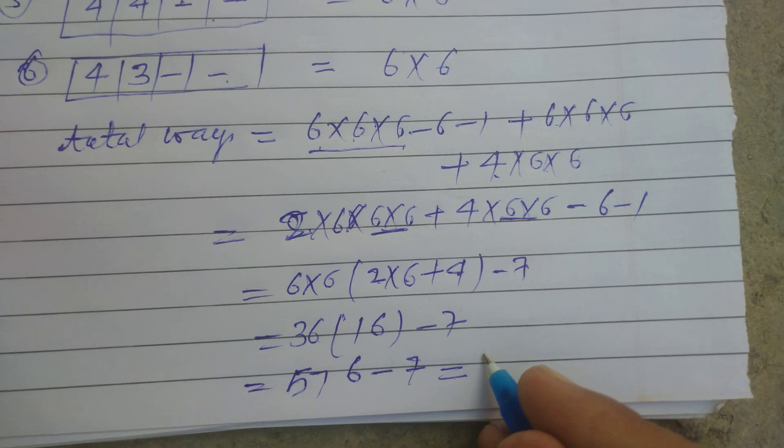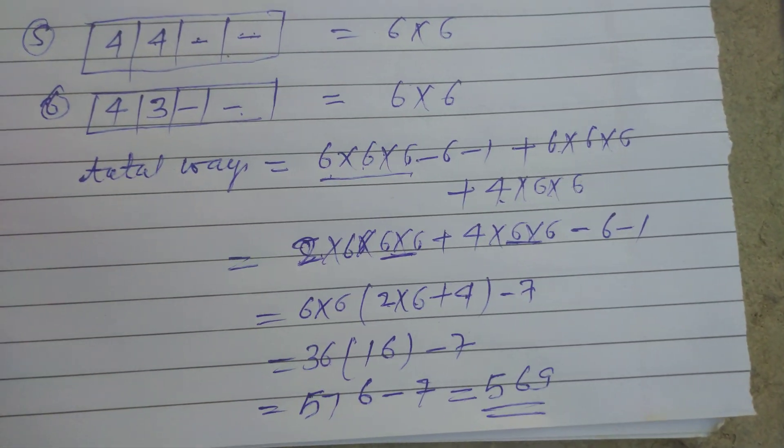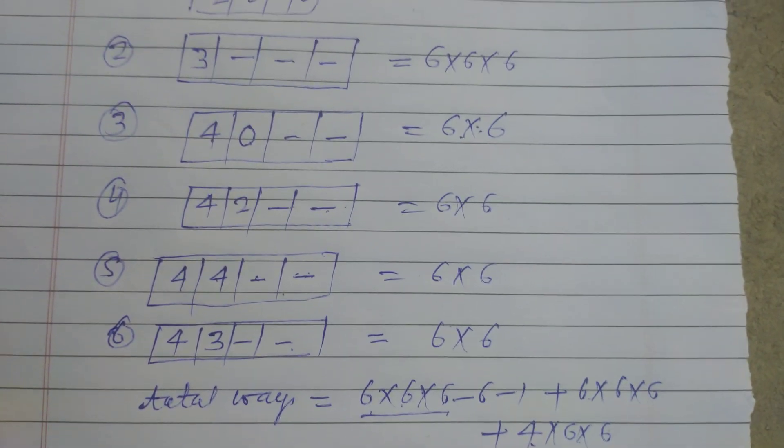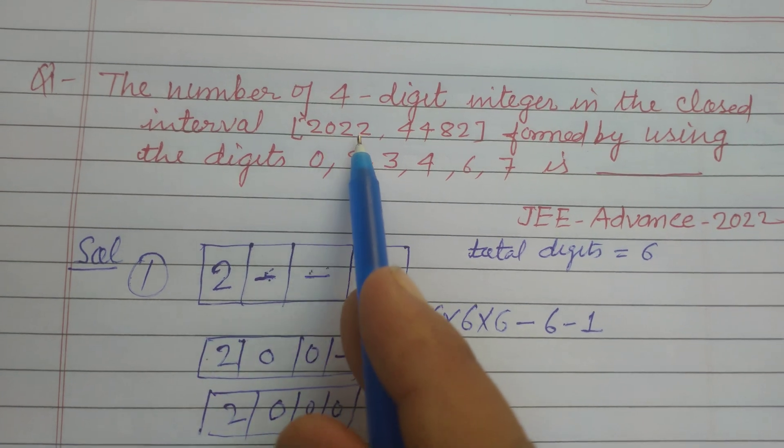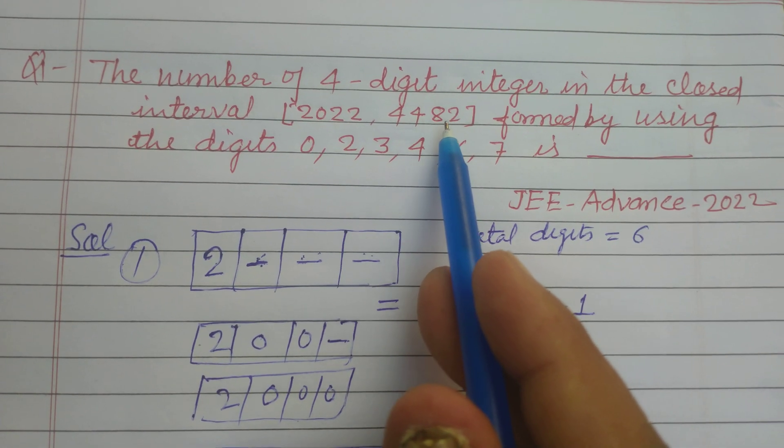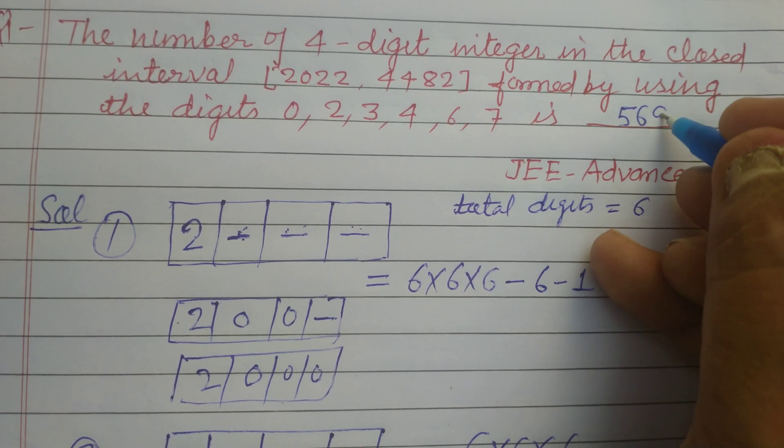So we got total ways are 569. So 569 are the total ways of the numbers which are formed under the interval 2022 to 4482. So the answer of this question is 569.